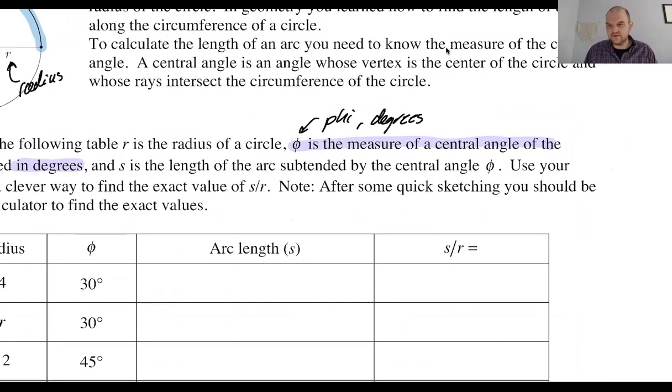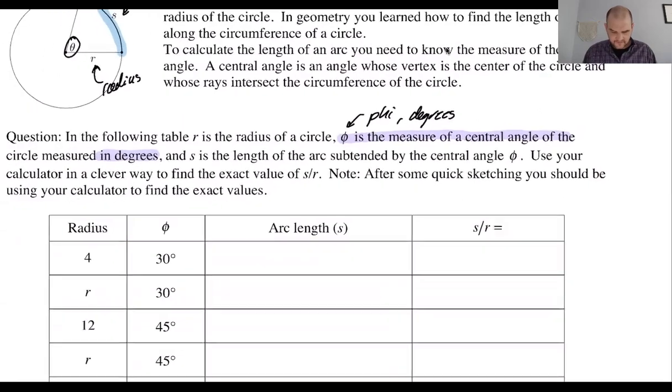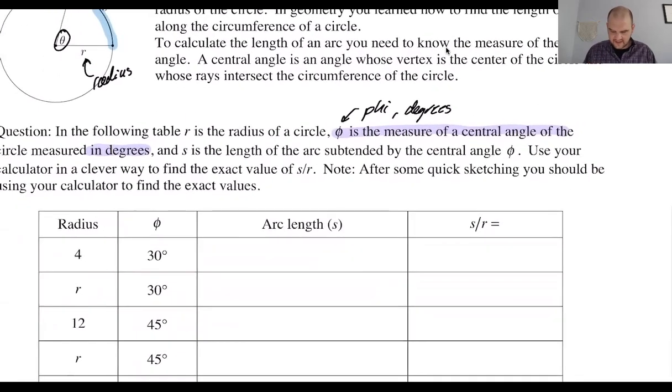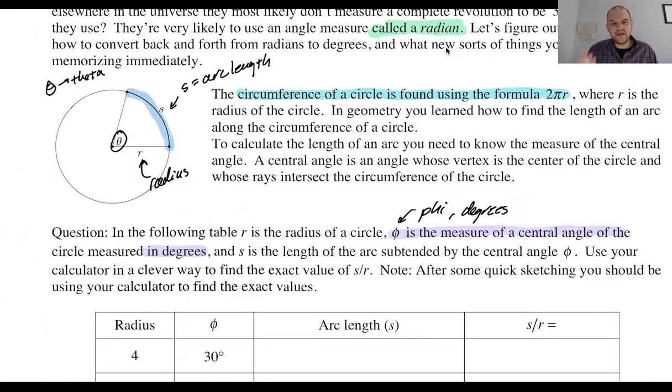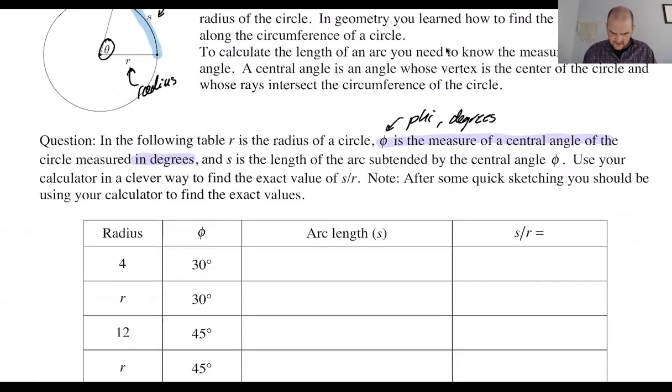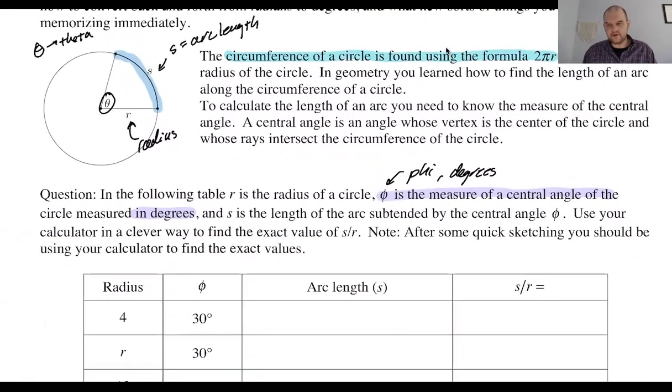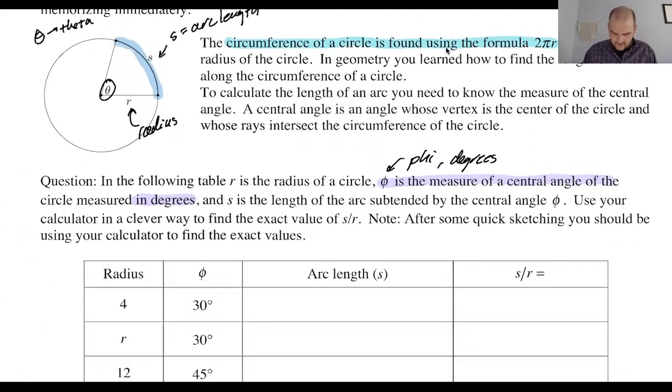But phi. And it's going to be in degrees. But it doesn't always need to be in degrees. It's not like phi is in degrees. Phi is just a variable. It could be an X, it could be a Y, it could be a Z. Whatever. And it's going to be measured in degrees. So if phi is measured in degrees, S is the length of the arc subtended by the central angle. So subtended just means cut off by. So S is the arc subtended. And we are going to find the ratio of S to R. Let's see what's going to happen here.